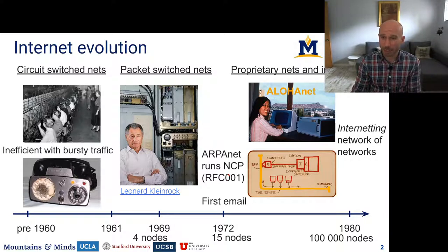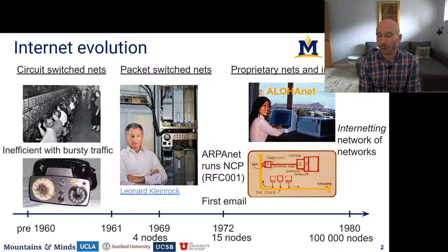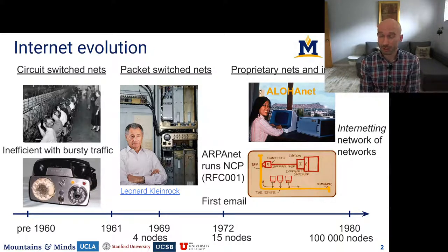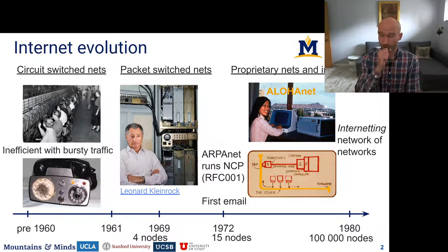Around the same time there was also development in wireless networking. AlohaNet is the first example — the idea was to connect the different Hawaiian islands with wireless links on the same channel, and different computers could send packets through those channels. This was the first network that didn't use direct connections between nodes but used a shared medium where nodes had to take turns, giving us the first medium access control protocol to coordinate these nodes.